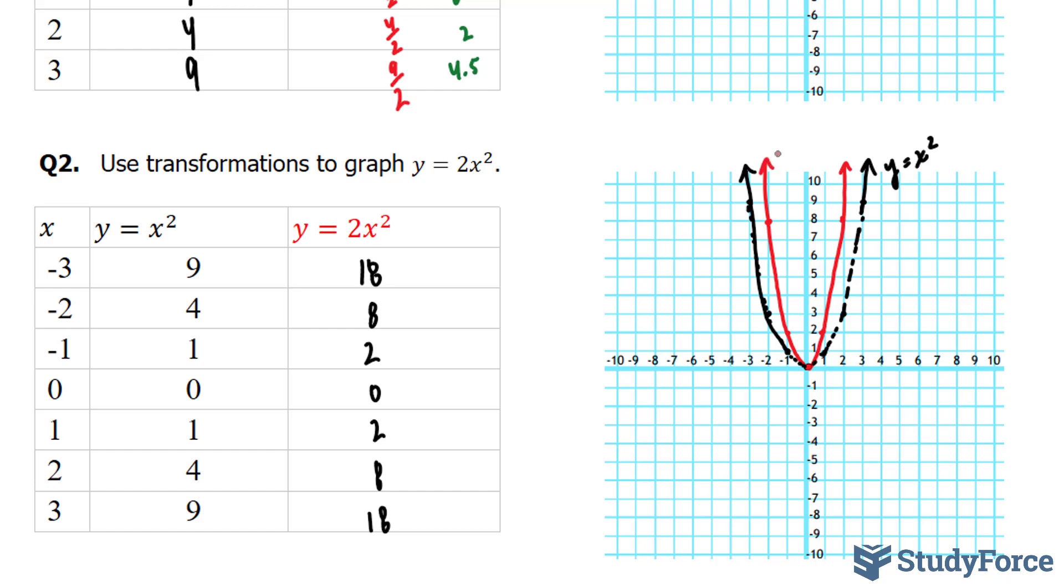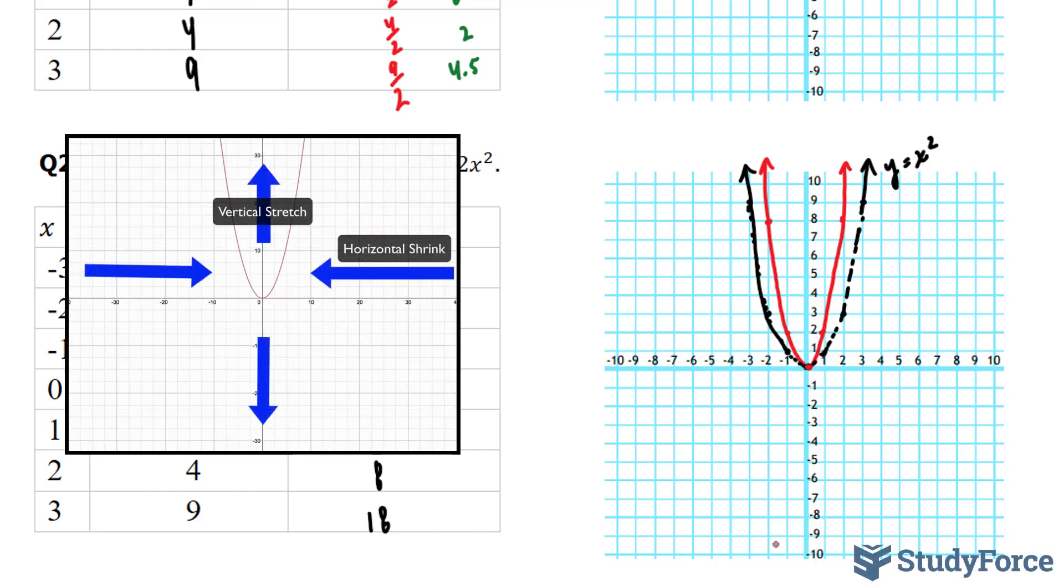Now, once again, you may be tempted to think that it has been compressed. But when you put a value in front of the x squared term, we actually refer to it as a vertical stretch. So in our case here, this is called a vertical stretch. Think of it this way. Imagine I had my finger here, and I pulled down this black curve from its vertex, and I pushed it down, thus causing the black parabola to stretch.